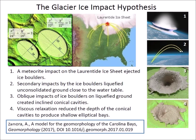The aeolian hypothesis has not been able to explain the mechanism by which the Carolina Bays achieved their mathematically precise elliptical geometry. Since ellipses are conic sections, the Glacier Ice Impact Hypothesis proposes that the Carolina Bays were made by secondary impacts of glacier ice ejected in ballistic trajectories by a meteorite impact on the Laurentide Ice Sheet. The impacts of the ejected ice boulders liquefied consolidated ground, and the ice projectiles created inclined conical cavities that were remodeled into shallow elliptical bays by viscous relaxation.